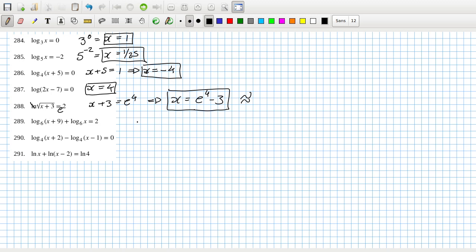Now it gets a bit interesting in 289. I have to use the rule that says it's a product here, so that means log base 6 of x squared plus 9x equals 2, or that's the same as log base 6 of 36. I can cancel the log 6's and I get a quadratic x squared plus 9x minus 36 equals 0.